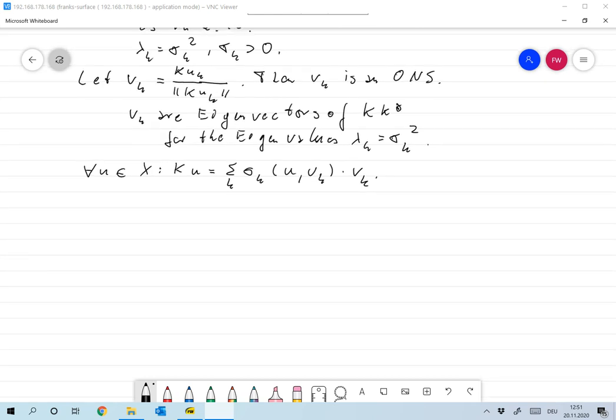And on the other hand for all v in Y, I claim that K* v can be represented as the sum overall k, sigma_k scalar product of v and v_k times u_k.